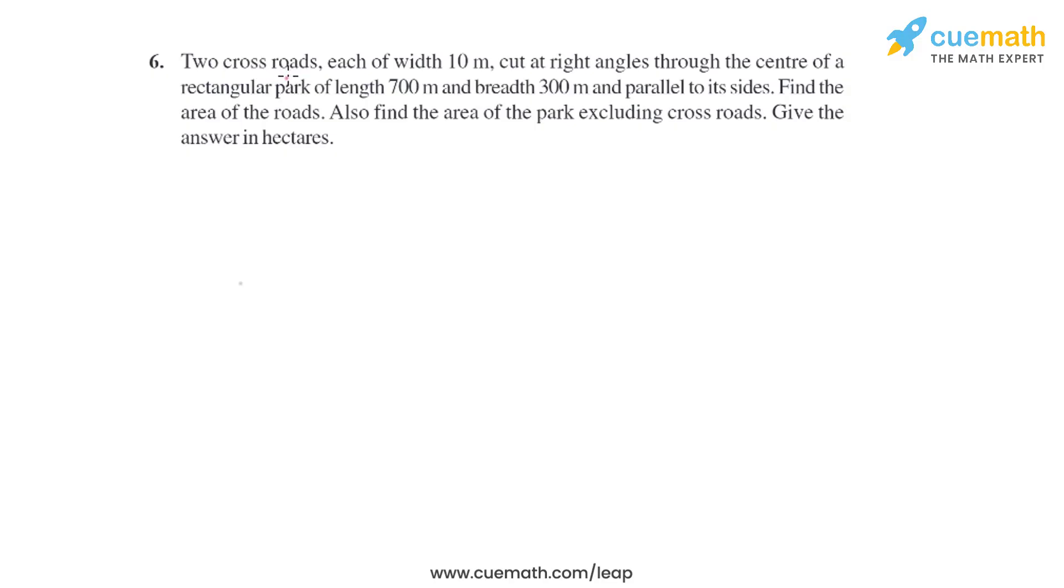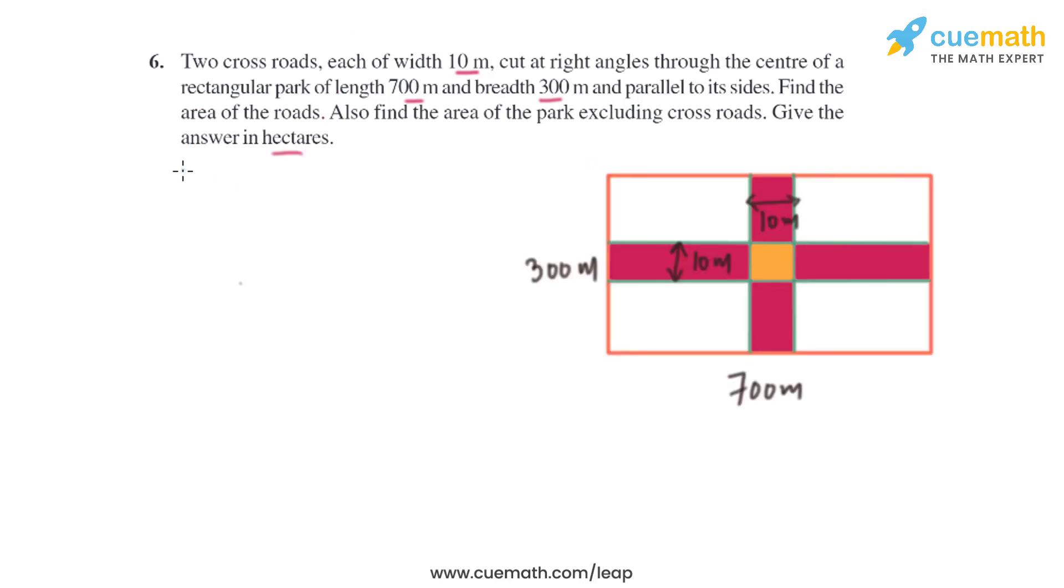Question 6 of this exercise says: Two crossroads, each of width 10 meters, cut at right angles through the center of a rectangular park of length 700 meters and breadth 300 meters, parallel to its sides. Find the area of the roads. Also find the area of the park excluding crossroads. Give the answer in hectares.